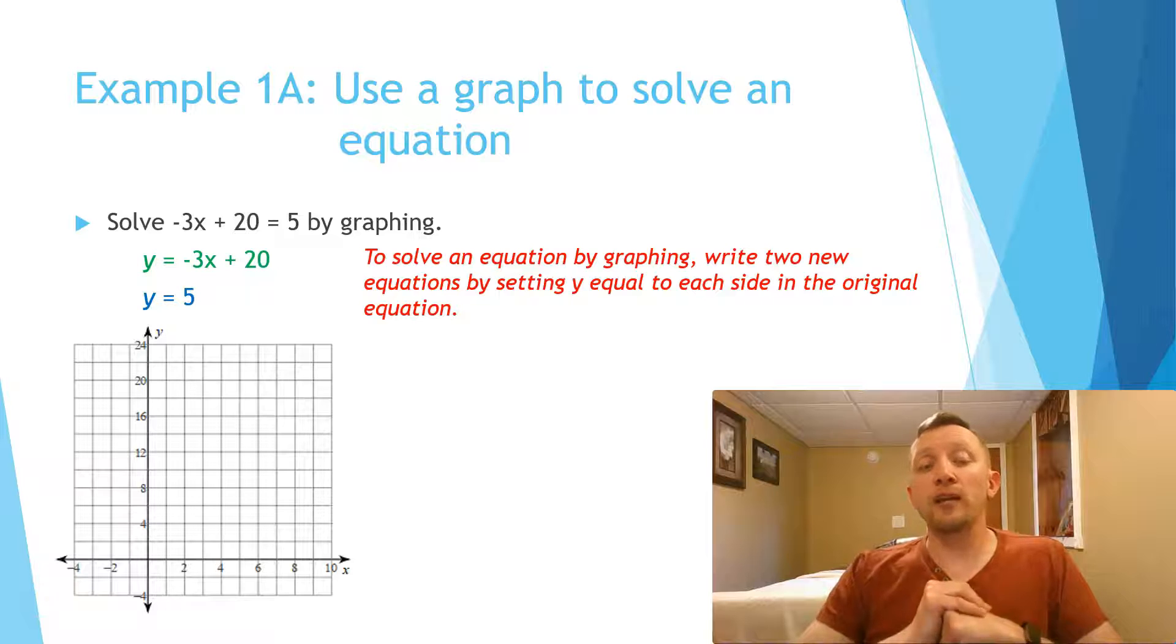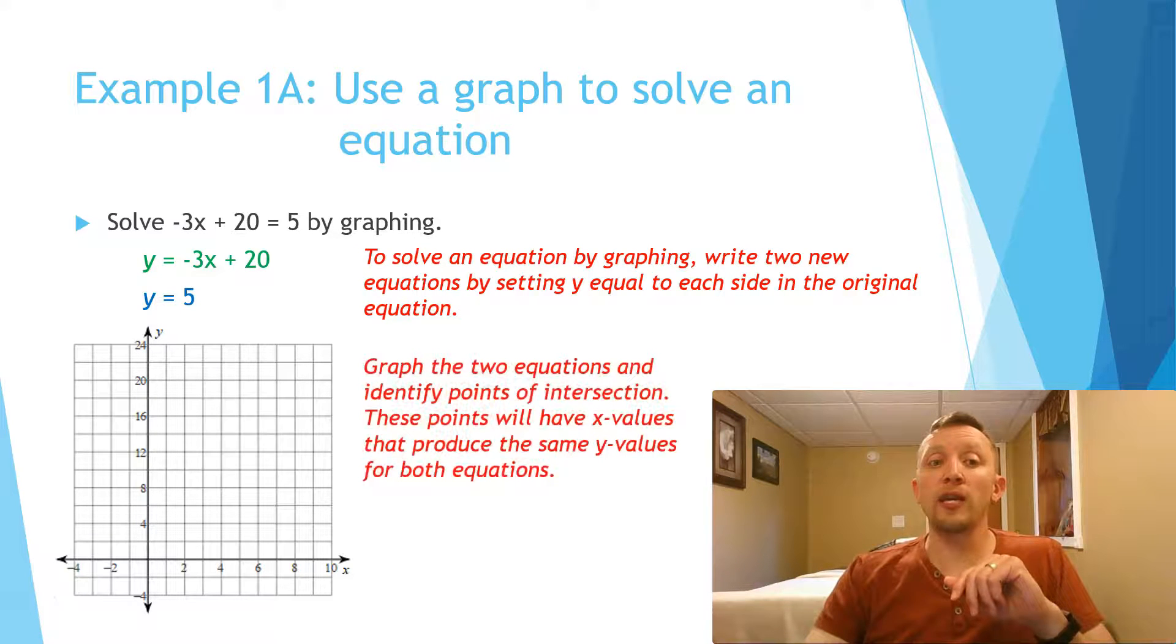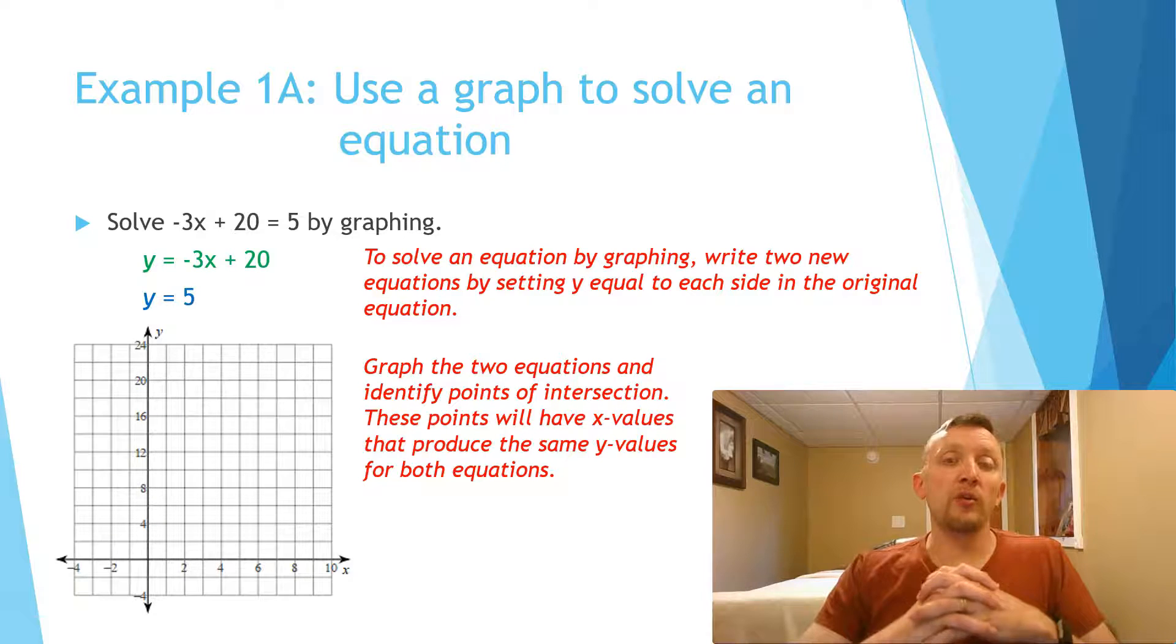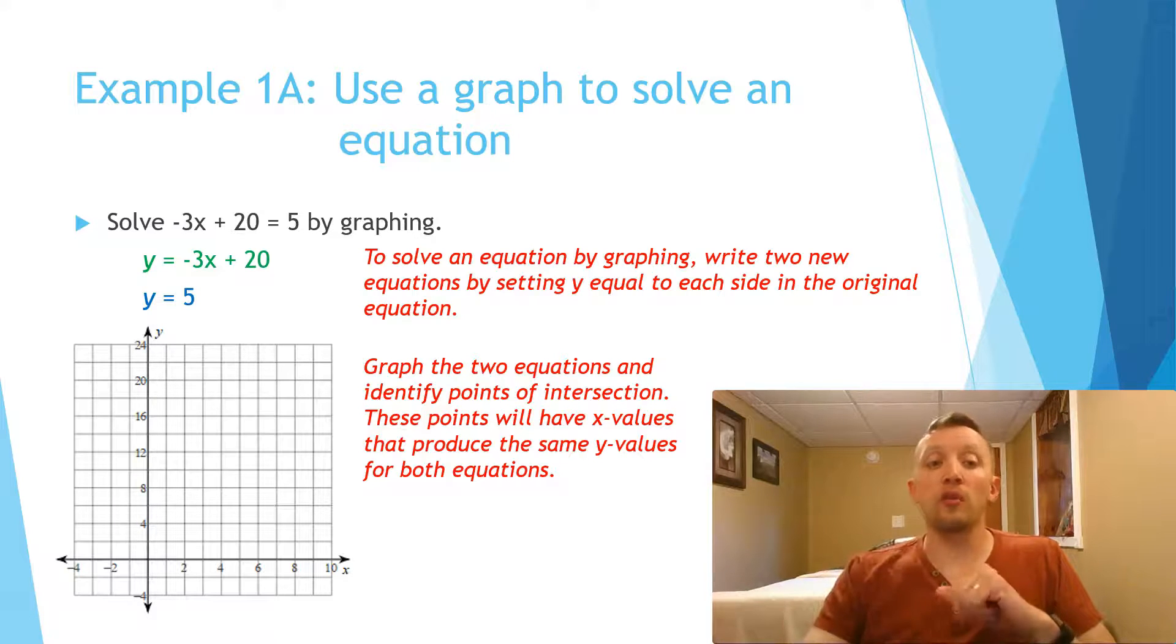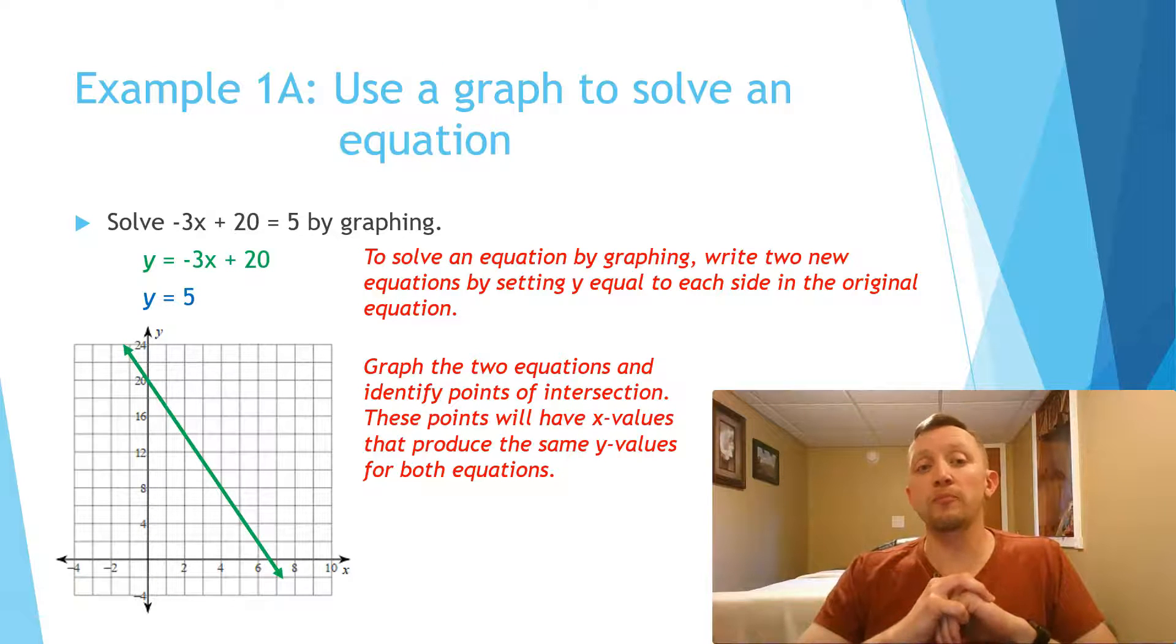If I graph -3x + 20, notice that is in slope-intercept form. So we can start with our y-intercept being 20, and our slope would be -3. So we would go down 3 units and over 1. Now recognize that the y-axis is not counting by 1s, so we're not going to go down 3 squares and over 1 square. We'd go down 3 units and over 1 unit because the x-axis is counted by 1s.